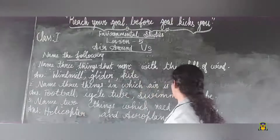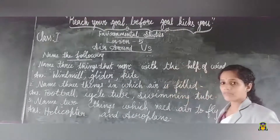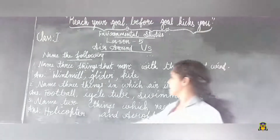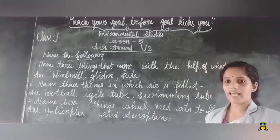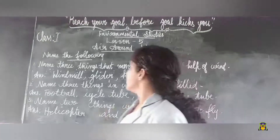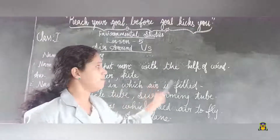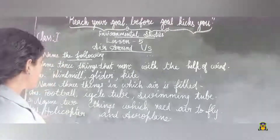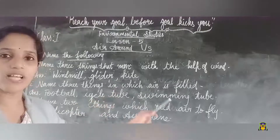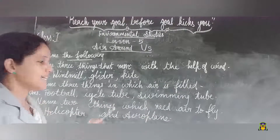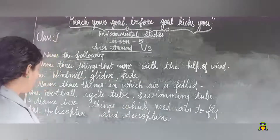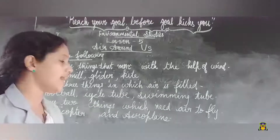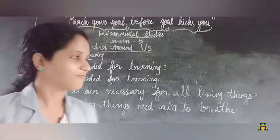Next question: Name two things which need air to fly. Answer: helicopter and aeroplane. Review — first question: Name three things that move with the help of wind: windmill, glider, kite. Second question: Name three things in which air is filled: football, cycle tube, swimming tube.